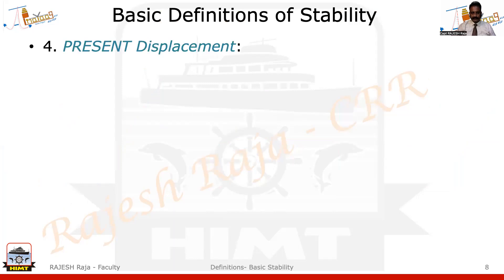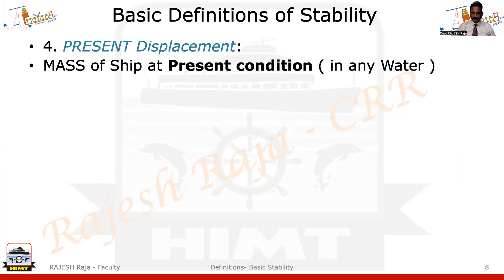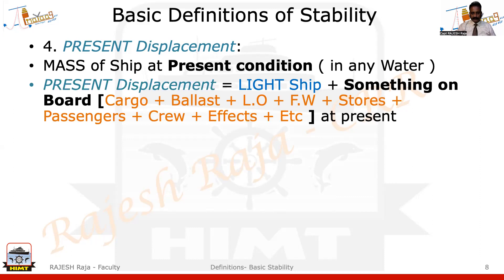The next definition is present displacement. In simple terms, it is neither light displacement nor load displacement. Whatever the ship's condition is at present, in any water — it can be seawater also — as long as I am not at light and not at load, I call it present displacement. The equation is: present displacement equals light ship plus whatever is loaded at the present condition.